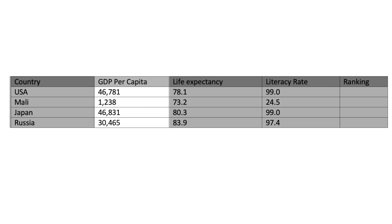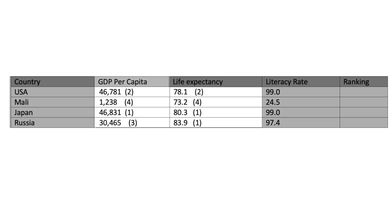What you do is rank each country based on each category. Starting with GDP per capita, find who has the highest. According to this chart, Japan has the highest at forty-six thousand eight hundred thirty-one, so you put a one next to it. The second is the United States, third is Russia, and fourth is Mali. Then do the same for life expectancy and literacy rate, ranking highest to lowest. Countries can tie — that's okay. Once done, you'll have three numbers per country. Add those up to get a raw score. The lowest raw score means the highest standard of living; the highest raw score means the worst standard of living.